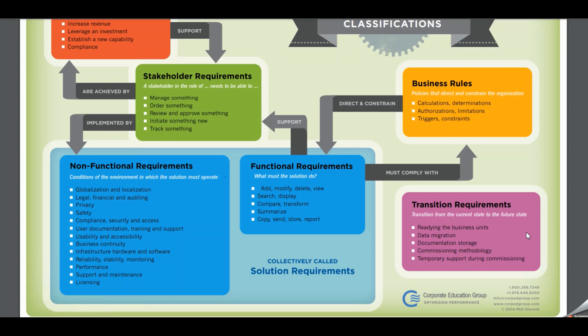Examples of transition requirements include user cheat sheets and data migration from an old system to a new system. These must be prepared before implementing a new process or change, but once users become familiar with the new system they won't need cheat sheets anymore. Similarly, once data migration is complete and everyone adopts the new system, that requirement is no longer needed.